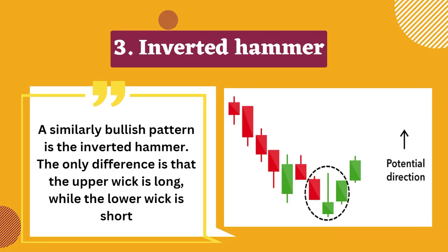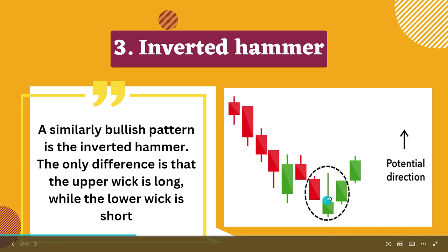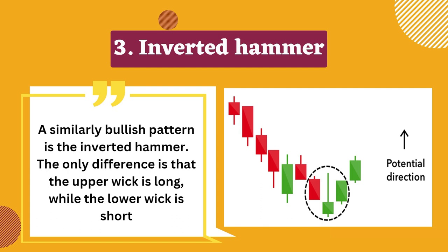The third pattern is the inverted hammer. Similarly to the hammer, the inverted hammer is a bullish pattern — the only difference being that the upper wick is long while the lower wick is short. It indicates a buying pressure followed by a selling pressure that was not strong enough to drive the market price down. The inverted hammer suggests that buyers will soon have control of the market.